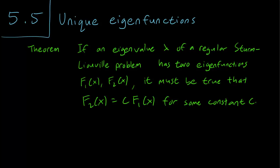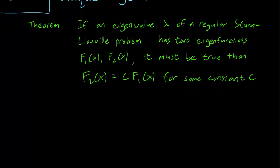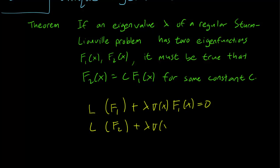So let's write down the Sturm-Liouville equation in operator form. So we have L of f1 plus lambda sigma x f1x equals 0. And since we have two eigenfunctions, let's write the equation for the other eigenfunction as well: lambda sigma x f2x equals 0.